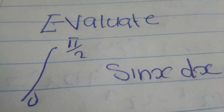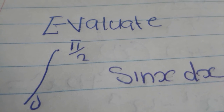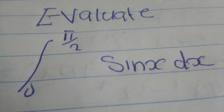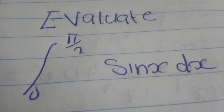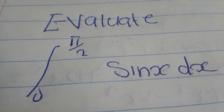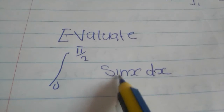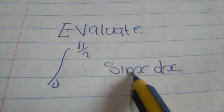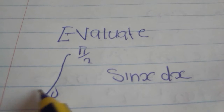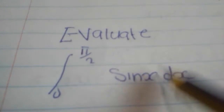How to evaluate this integral from 0 to π/2 of sin(x) dx. When you integrate sin(x), you are going to get negative cos(x). Note that when you differentiate sin(x) you get cos(x), but when you integrate sin(x) you get negative cos(x).